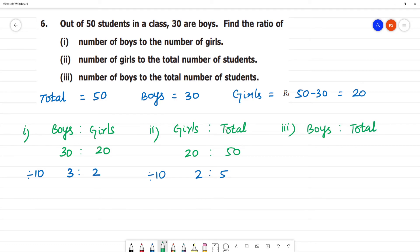Boys: 30. Total: 50. So divide by 10. 3 is to 5. Clear. So this is the answer.